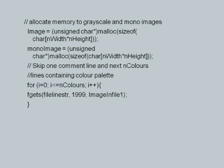The most important part comes here: I allocate memory to grayscale and mono images using dynamic memory allocation with malloc. Please note that image was defined as a character pointer, and mono image as another pointer. When you use malloc to allocate a memory chunk from the operating system, malloc returns a pointer of type void — meaning it does not point to any specific data type. So you have to typecast it using the typecast mechanism, saying unsigned char star at the beginning.